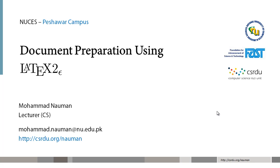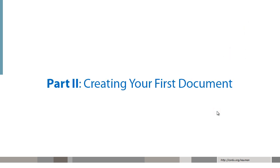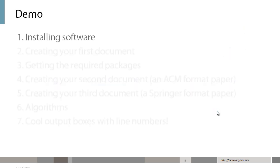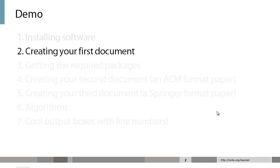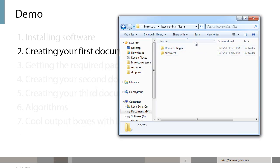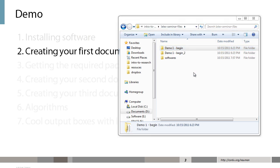We're continuing with our document preparation using LaTeX second edition video series. This is part two: creating your first document. In part one we studied how to install the software and configure it for basic use. Today we are going to start with our first document, and for that you are going to need to download the files for the demo. The link can be found in the description, or if you have access, on the lecture server as well.